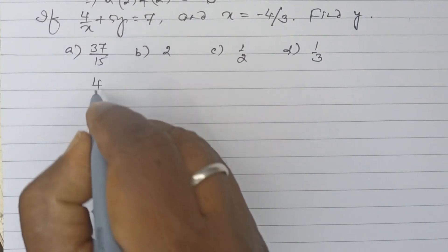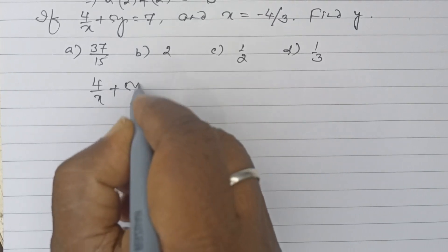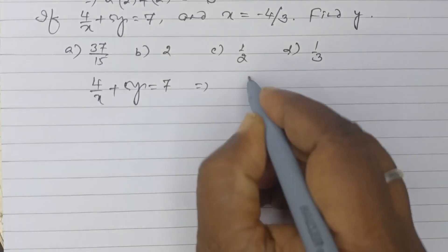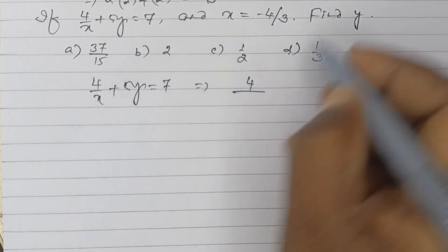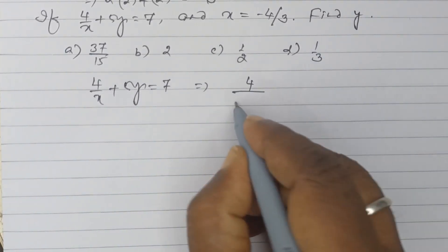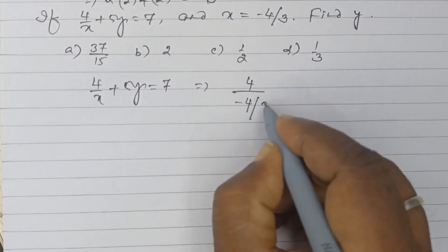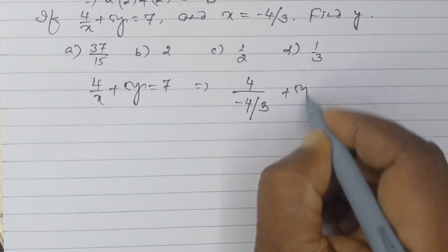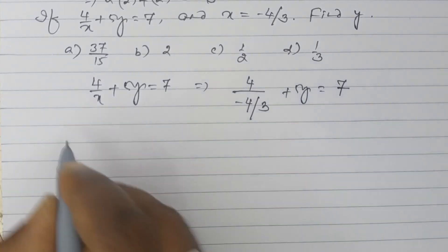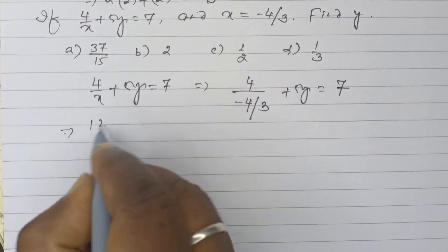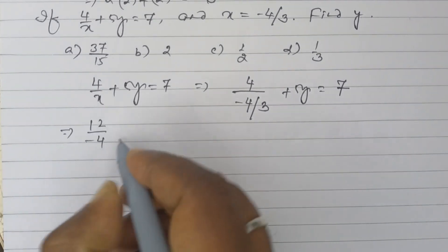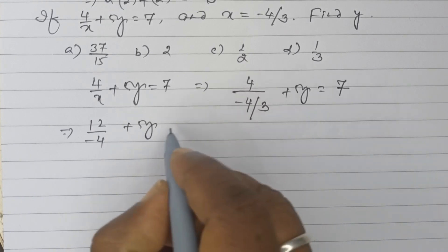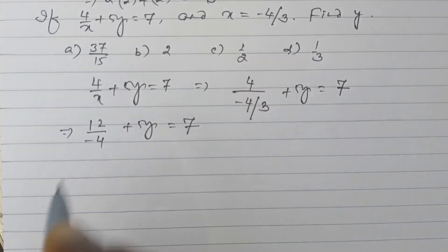Here, 4 by x plus 5y is equal to 7. Now substituting x equals minus 4 by 3: 4 divided by (minus 4 by 3) plus 5y is equal to 7. This gives 12 by minus 4 plus 5y is equal to 7.